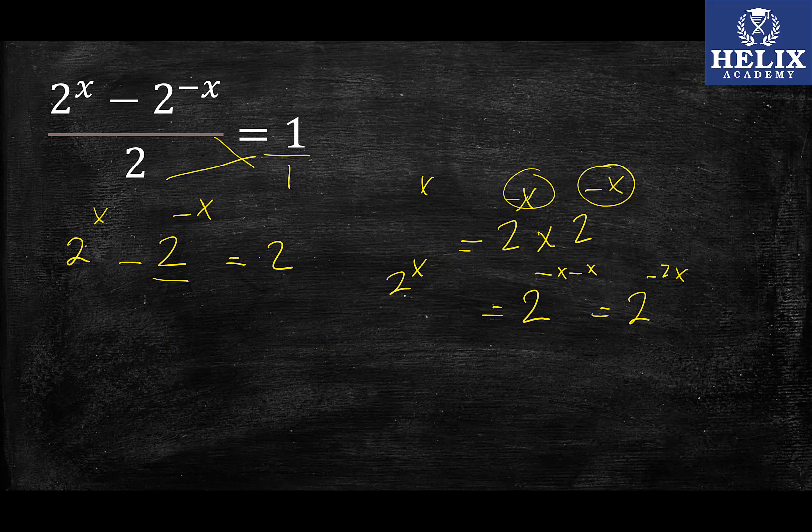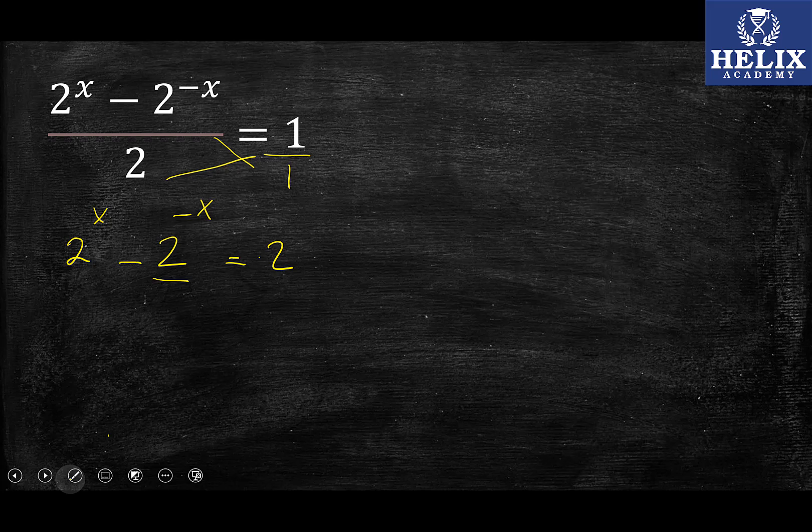Now when this happens and I can't really figure out what to do, I'd like to substitute, use the substitution method. So what I'm going to do is that I'm going to use a different color actually. Let's do orange and then I'm going to let a be equal to 2^x.